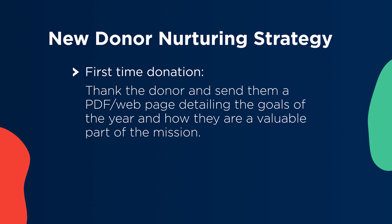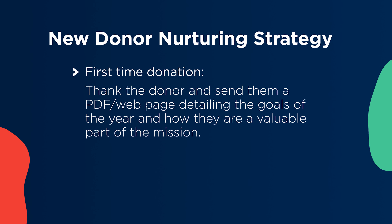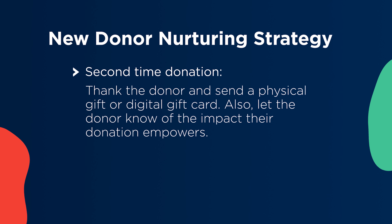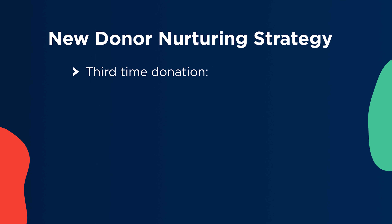This can be as complex or as simple as you'd like. However, the most important part of new donor nurturing is simply planning the work and working the plan. To get started, you can divide your donor nurturing strategy into three steps: first-time donation, second-time donation, and third-time donation. When a donor makes their first-time donation, thank the donor and send them a PDF or a webpage that details your nonprofit's goals for the year and how the donor plays a valuable part in accomplishing that mission. For the second donation, thank them for their generosity, let them know of the impact their donation empowers, and send them a physical gift like a branded tote bag, mug, hat, or some other small branded gift.